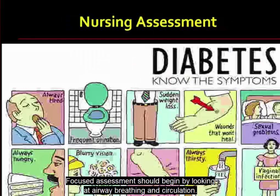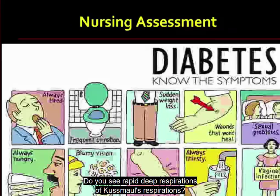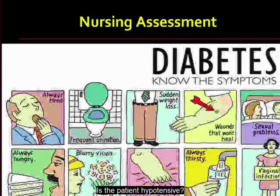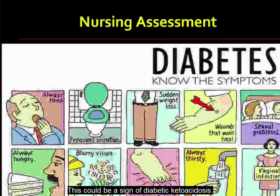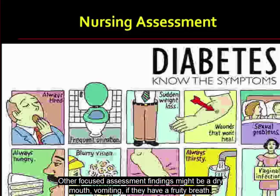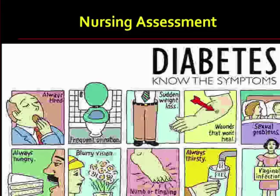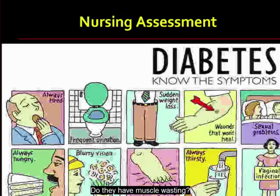Focused assessment should begin by looking at airway, breathing, and circulation. Are there rapid deep respirations — Kussmaul's respirations? Is the patient hypotensive? Do they have a weak rapid pulse? These could be signs of diabetic ketoacidosis. Other focused assessment findings include dry mouth, vomiting, fruity breath, altered reflexes, restlessness, confusion, or muscle wasting.